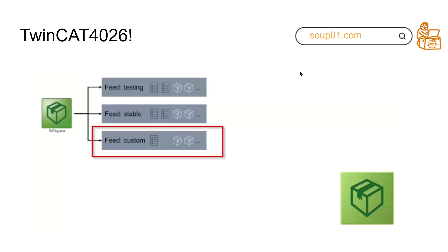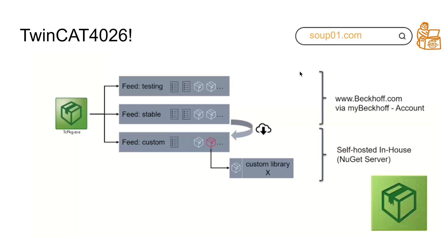In addition, the package manager offers a third type called a custom feed. The testing and stable feeds are provided by Beckhoff's servers, but a custom feed is provided by the user themselves. For example, if you have your own internal certified versions in your development team, or your own custom library, you can use a custom feed. While testing and stable feeds read from Beckhoff servers, a custom feed can also download packages from an NuGet server, giving maximum flexibility to every end user.